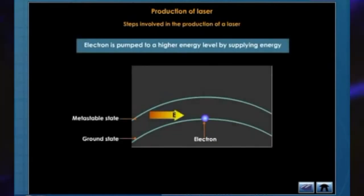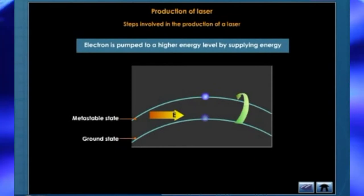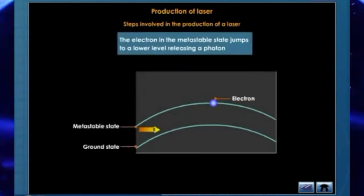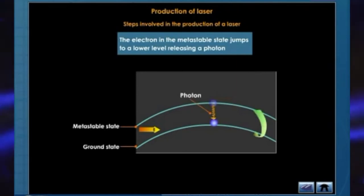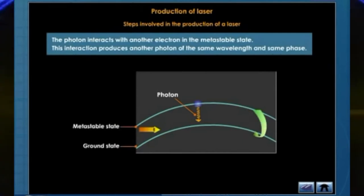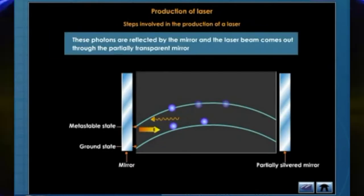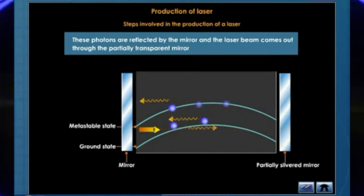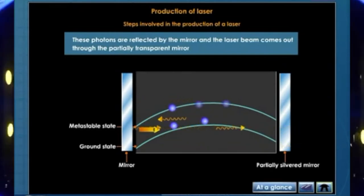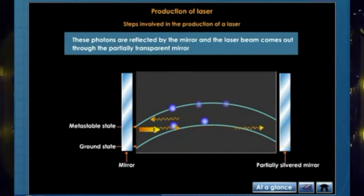The steps involved in the production of laser start with electrons being pumped to a higher level by supplying energy. The electron in the metastable state jumps to the lower level by emitting a photon. This photon interacts with another electron in the metastable state, producing another photon of the same wavelength and the same phase. These photons are reflected by the mirror and the laser light is emitted through the partially transparent mirror.